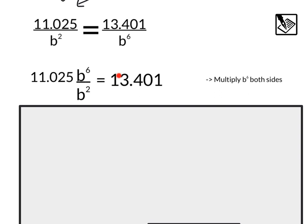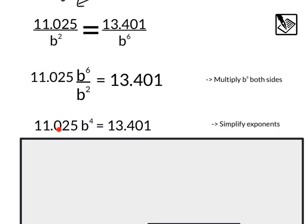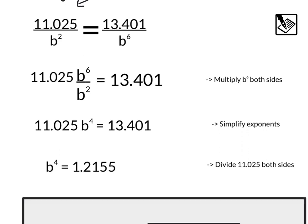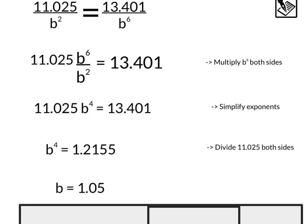This is where we need to keep our exponent rules in mind. Here we have b to the sixth over b squared. Two of those six are going to cancel out, or we can subtract, and we will get 11.025b to the fourth equals 13.401. And that's simplifying our exponents. From there we can divide 11.025 from both sides. That's going to give us b to the fourth power equals 1.2155. And we need to take the fourth root of that side as well. And we will end up with b equals 1.05. That's taking the fourth root of both sides.